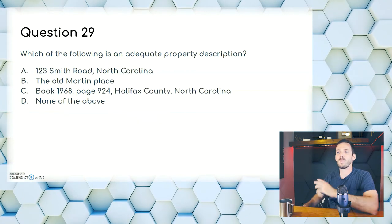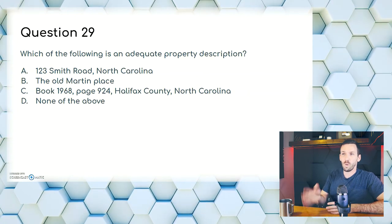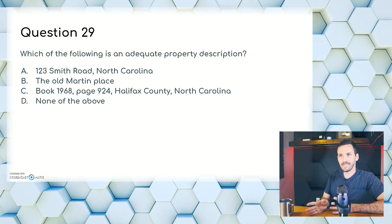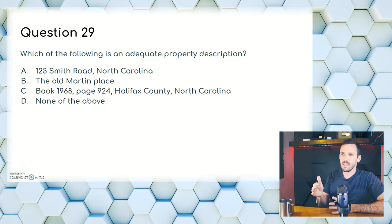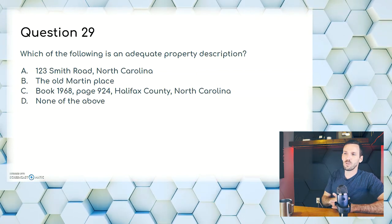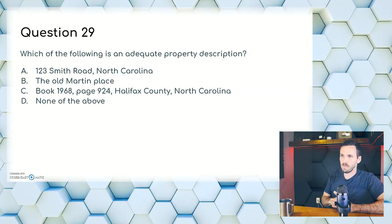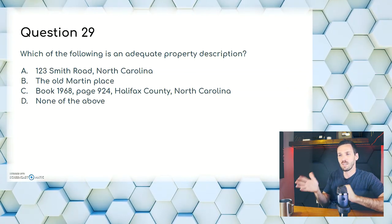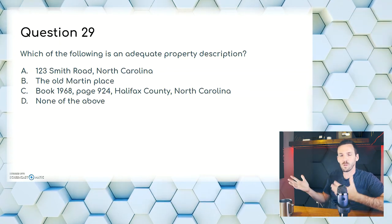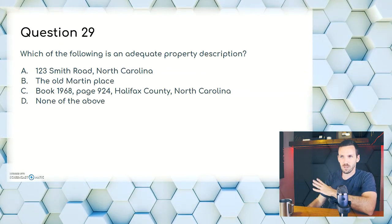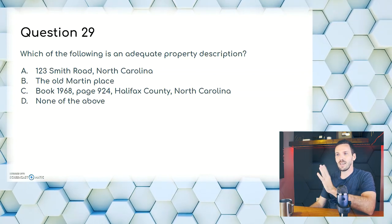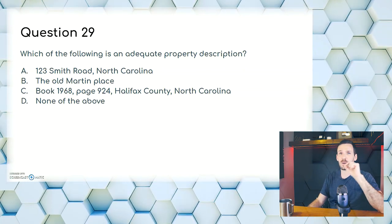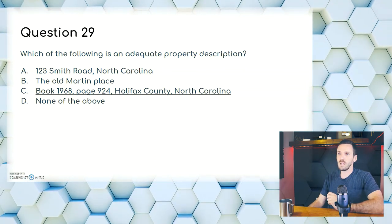Question twenty-nine: which of the following is an adequate property description? A, 123 Smith Road, North Carolina; B, the Old Martin Place; C, Book 1968, page 924, Halifax County, North Carolina; or D, none of the above. A is the informal description like we discussed — no. B is just local talk about a location — not good. C: book and page are great examples of valid descriptions; you write this almost every time you write an offer to purchase. Answer is C.